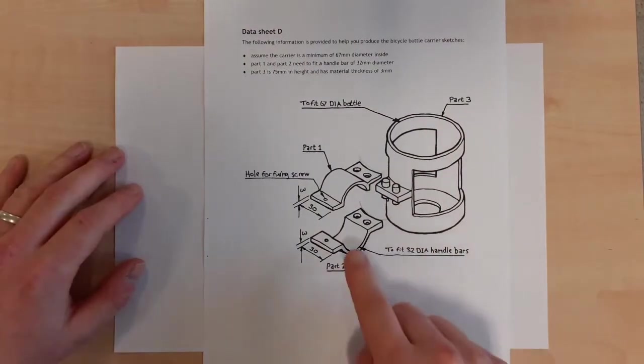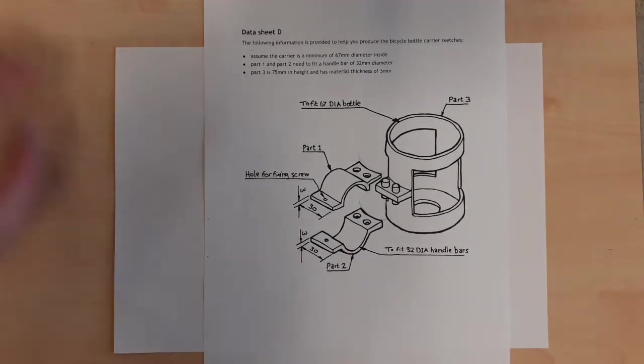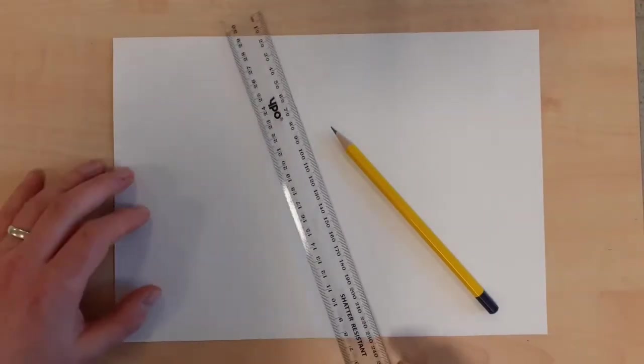Okay, in this video we're going to look at part two of the drinks bottle carrier. We've got to draw three preliminary orthographic views: an elevation, end elevation, and a plan. To complete this exercise I've got a sheet of paper, A4, though A3 is probably better. I've got a pencil and I'm also going to use a straight edge as well.